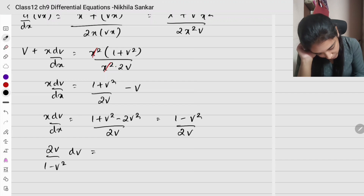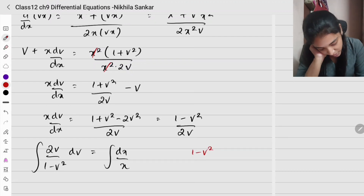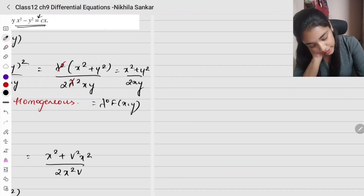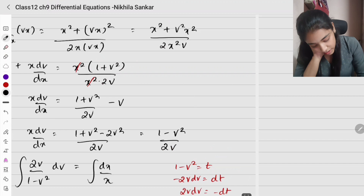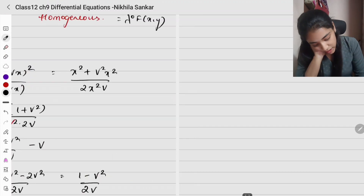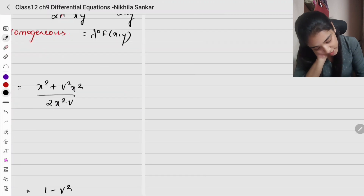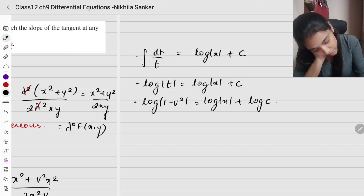Separating variables: 2v divided by (1 minus v squared) dv equals dx/x. Integrating both sides using substitution: let t = 1 minus v squared, so minus 2v dv equals dt, making 2v dv equal to minus dt. The integral becomes minus integral of dt/t equals log|x| plus c, giving minus log|t| equals log|x| plus c, i.e., minus log|1 minus v squared| equals log|x| plus c. Writing c as log c: minus log|1 minus v squared| equals log|xc|.